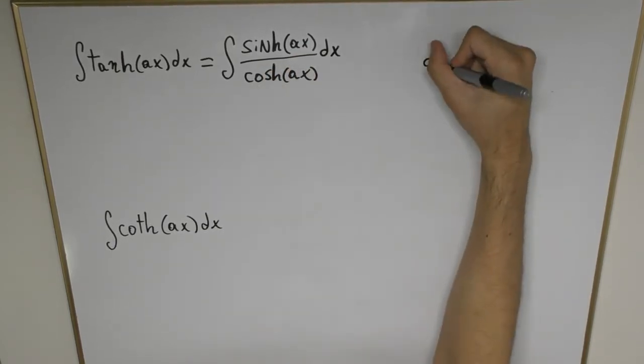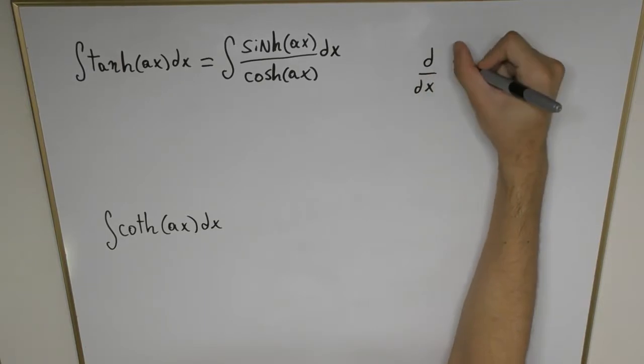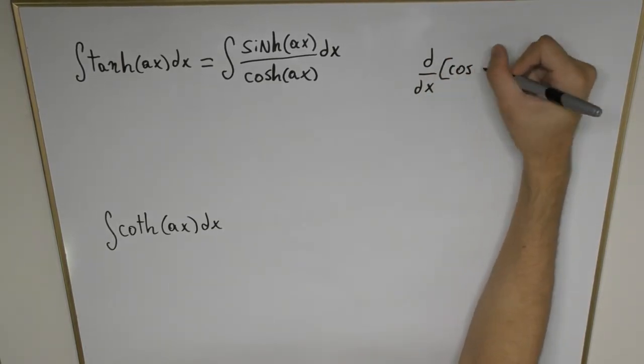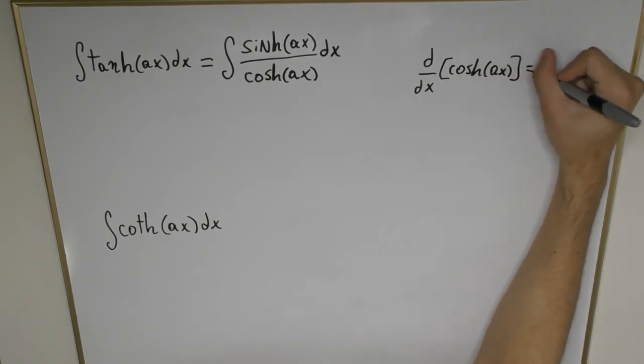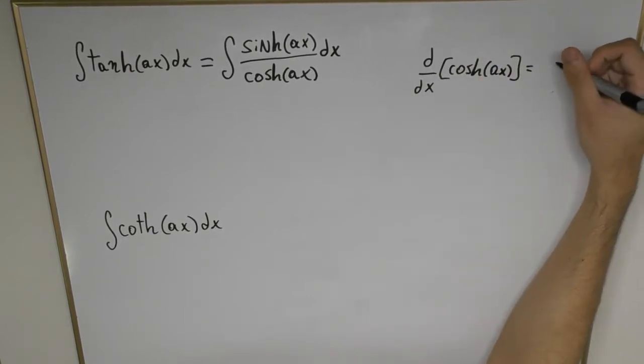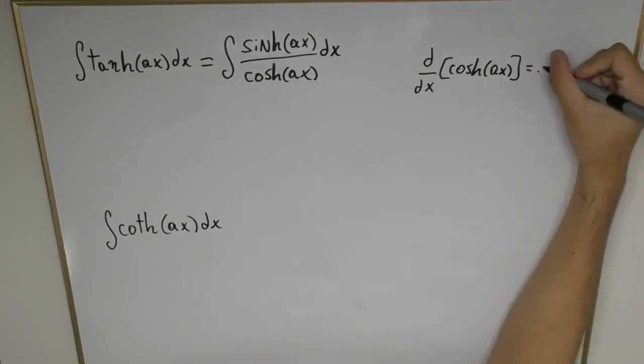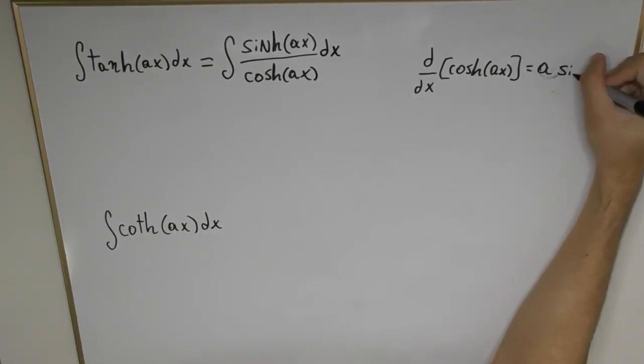Let's start off by differentiating the cosh function. We have cosh(ax), this one is going to differentiate into a at the front times hyperbolic sine ax.